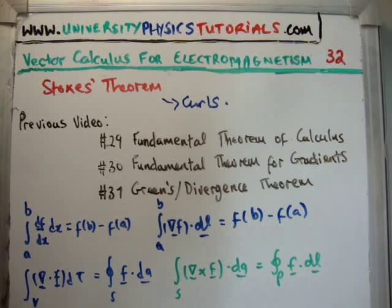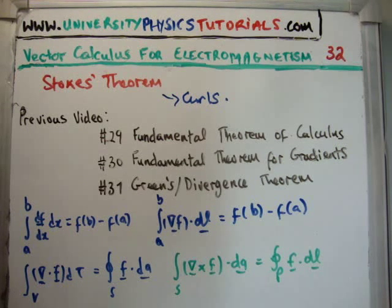So then we looked at the divergence theorem, or Green's theorem. Once again, we integrated a derivative. This time it was the divergence over a volume. And we got the value of the function at the boundary as the answer. This time it was the boundary of a surface, which bounded the volume.